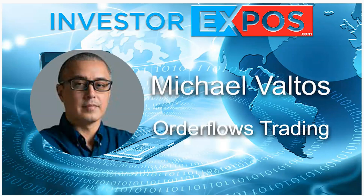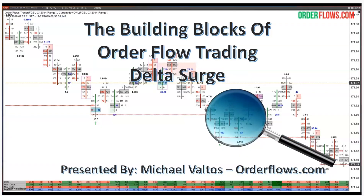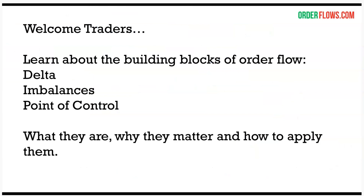Hey everyone, it's Mike from Order Flows. Welcome to today's presentation. I'll be talking about the building blocks of order flow, and especially the Delta Surge, which is a specific event that occurs in the order flow daily. You can use it on very short time frames — 30 seconds, one minute, five minute, fifteen minute charts. I'll be covering Delta, imbalances, and point of control, because those are the building blocks of order flow.